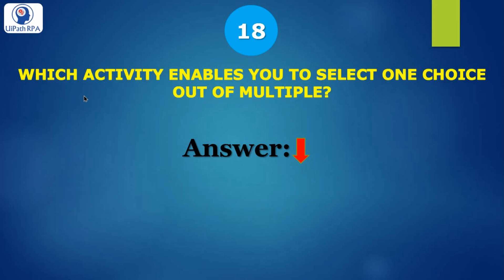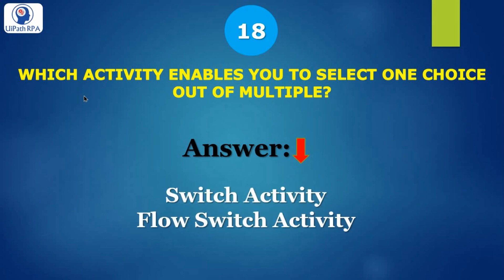Which activity enables you to select one choice out of multiple? We have two activities: Switch activity and Flow Switch activity. Switch activity is used with Sequence, and Flow Switch activity is used with Flowchart.